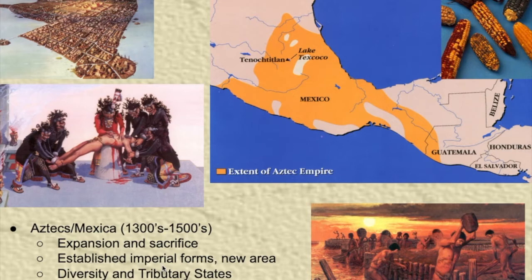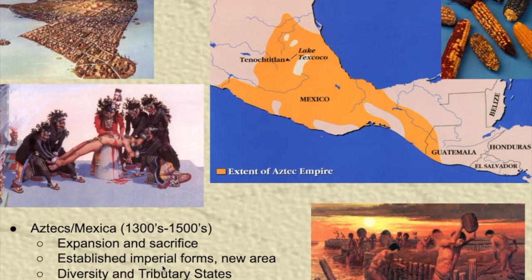How did empires govern diverse populations? For the Aztecs, the answer was to allow those diverse populations to remain diverse — they would not force them to speak a single administrative language or follow their religion. The Aztec empire was not centralized the way the Chinese empire would be, or even as we'll see the Inca empire. As long as you were doing what you needed to do, you could remain autonomous, semi-independent. That system is eventually going to work against them. When the Spanish showed up, many of these tributary states resented the tribute they were forced to pay and joined the Spanish, thinking they had nothing to lose.